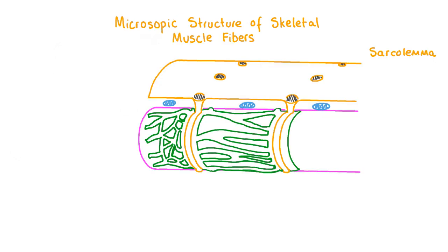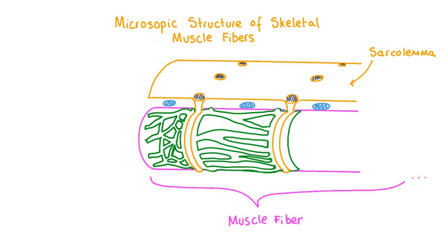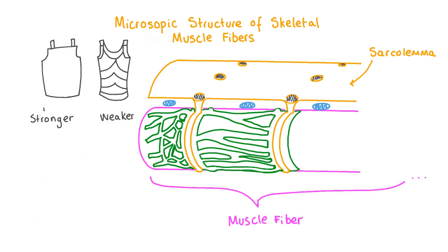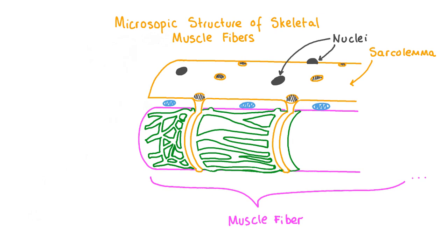Muscle fibers have several adaptations that make them effective for their function. Muscle fibers are much longer than other cells because they formed by many individual muscle cells fusing together when you were only an embryo. This makes the muscles strong, as any junctions between cells add a point of weakness, so having long cells reduces the number of weak points. This is also why a suit of armor is strongest when formed from one continuous sheet of metal, as every junction adds a weak point. As they are formed from many cells, one muscle fiber typically has many nuclei.